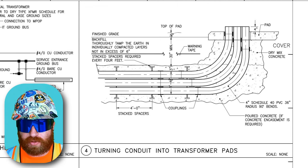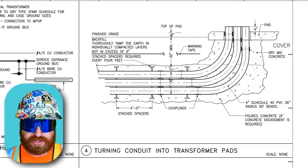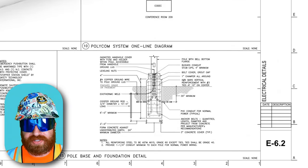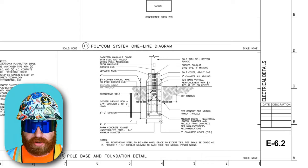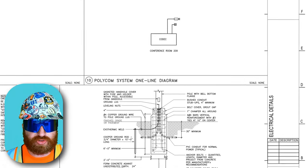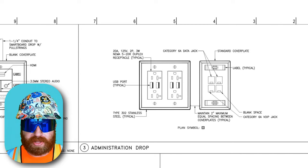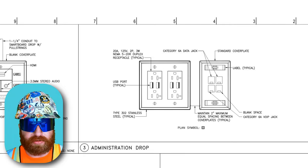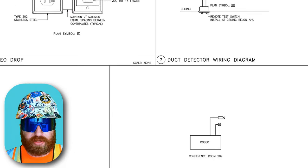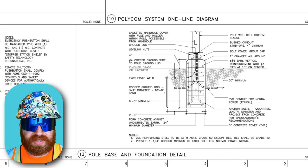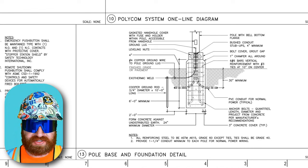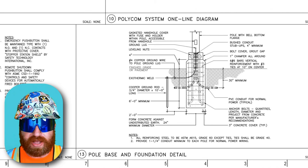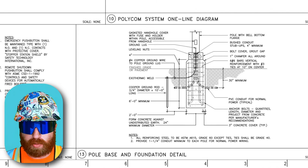On detail four, it shows exactly how the conduit is intended to run and enter the transformer pad. This tells us about the sequencing of work and everything that needs to happen before power goes live at that transformer. Moving on to E6.2, which has more electrical details — in our conference room from earlier, we recalled the letter A for the administration drop. Zooming in on that detail, we can clearly see what's intended for an administration drop, which includes both receptacles and data outlets. Down on detail 13, we have the light pole base detail. We'll skip E6.3 and E6.4 as these are similar pages expanding on those close-up details.